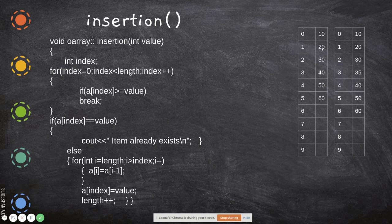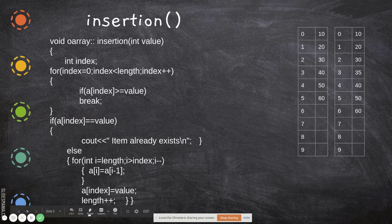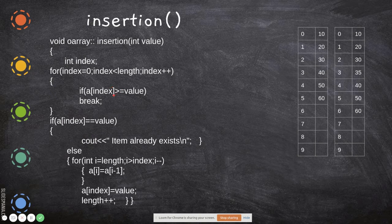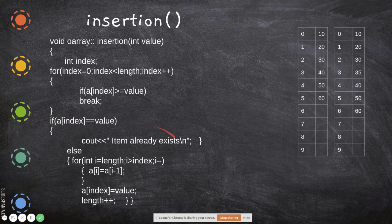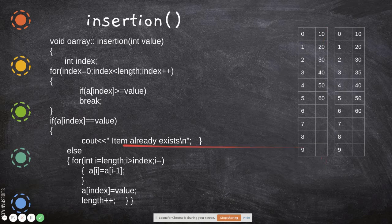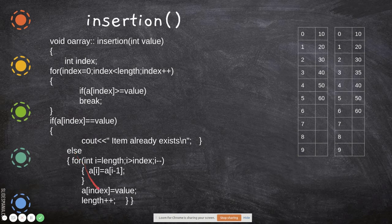Then a[3]=40, which is greater than 35, so the loop breaks. The current index value is 3. We then check whether a[3] equals 35 — this is to check if the item already exists. If 35 is already present it will not be inserted again, so there will be no duplication; only unique values are stored. Since 35 is not present, we proceed to the else part.